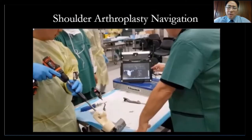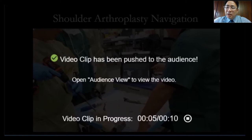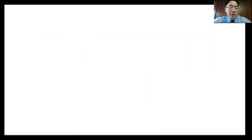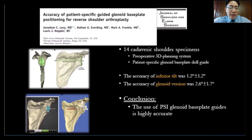We have navigation systems and patient-specific instrumentation available. For me, I don't prefer navigation because it's real-time and keeps moving. I prefer PSI. With PSI, you have less chance of deviation — the accuracy is very good, only 1 to 2 mm or degrees of deviation.